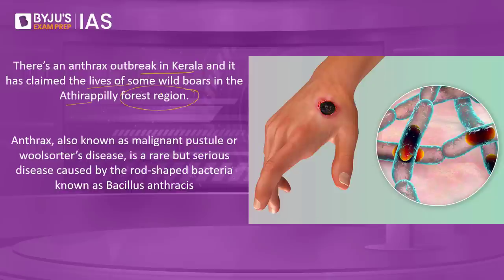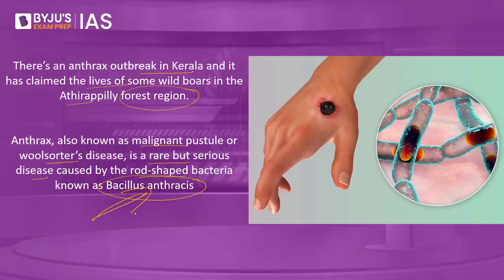What is anthrax? It is also known as malignant pustule or Uldsotter's disease. It is a rare but serious disease caused by the rod-shaped bacteria known as Bacillus anthracis. It is an infectious bacterial disease of animals caused by a spore-forming bacteria called Bacillus anthracis, which occurs naturally in the soil and usually affects domestic and wild animals around the world.